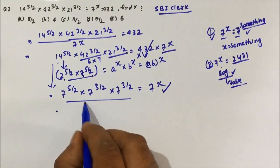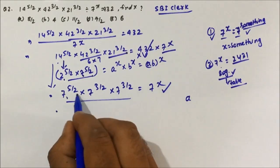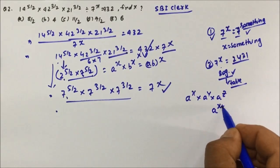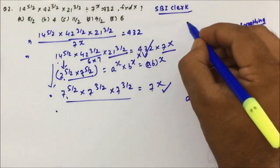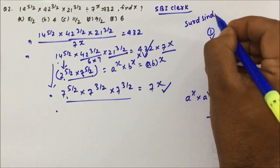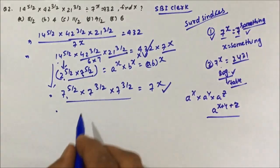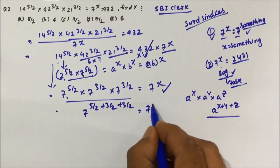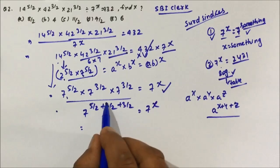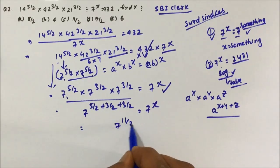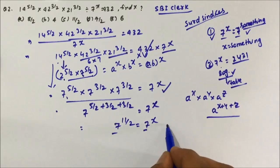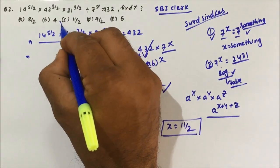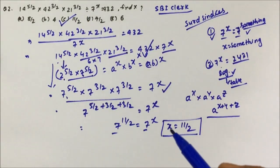When the base is the same, powers are added: 7^x × 7^y × 7^z = 7^(x+y+z). So we get 7^(5/2 + 3/2 + 3/2) = 7^x. Now 5 + 3 = 8, 8 + 3 = 11, so 7^(11/2) = 7^x. Since the bases are equal, the powers are equal, giving x = 11/2.